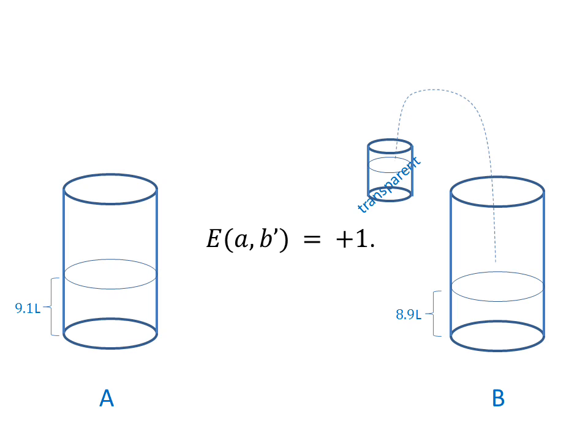Third coincidence measurement. Now we take a sample of one liter from vessel B. Observation on the sample indicates that the water is transparent. The result is yes. The act of taking the sample, however, leaves 8.9 liters of water in vessel B, which is less than the volume of water in vessel A, 9.1 liters. The result for A is yes. Therefore, the result from the coincidence measurement in this case is E_AB' equals plus one.